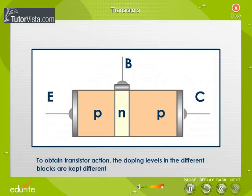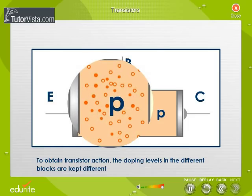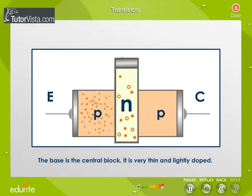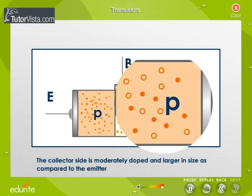To obtain transistor action, the doping levels in the different blocks are kept different. The emitter is of moderate size and heavily doped. The doping supplies a large number of majority carriers. The base is the central block. It is very thin and lightly doped. The collector collects a major portion of the majority carriers supplied by the emitter.